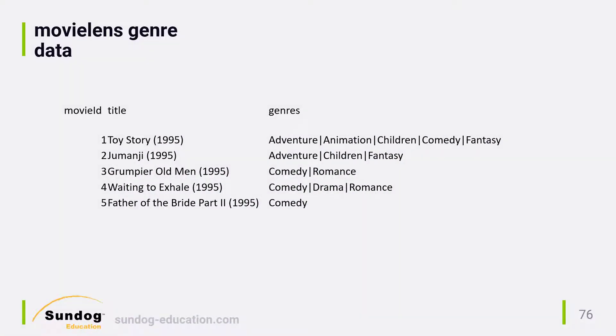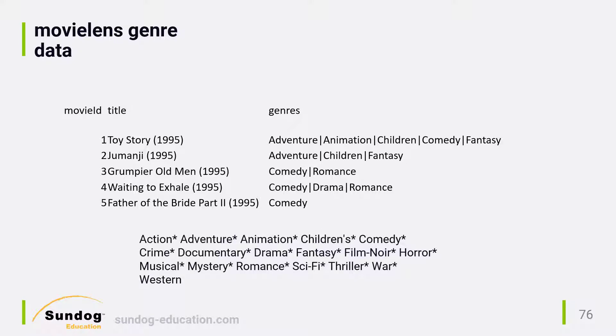Let's start by thinking about how to measure the similarity between two movies just based on their genres. Here's what the raw data from MovieLens looks like. For each movie, we're given a pipe-delimited list of the genres that apply to that movie. In all, there are 18 different possible genres for every movie, so we can imagine some sort of similarity measure that looks at how many genres any given pair of movies have in common. So what's a good way of doing that mathematically?